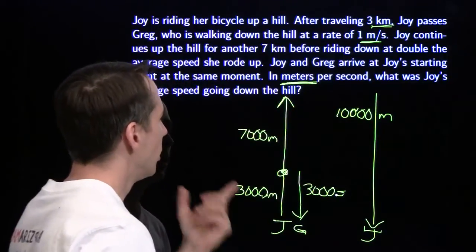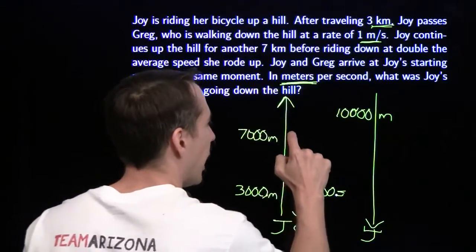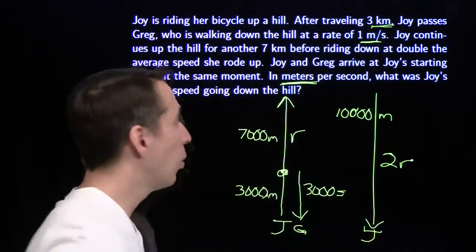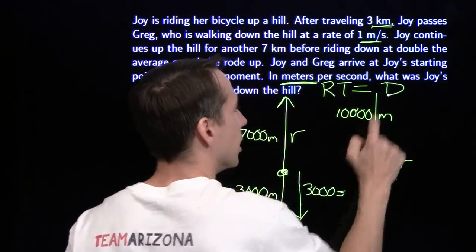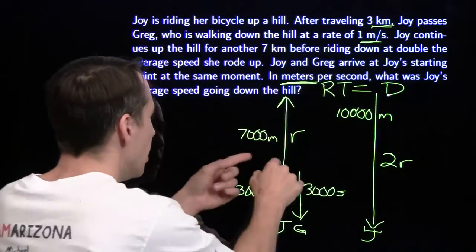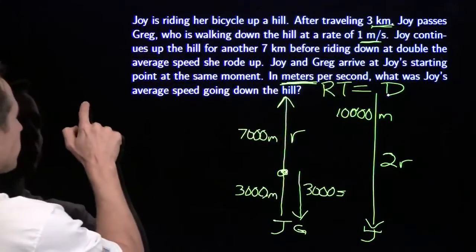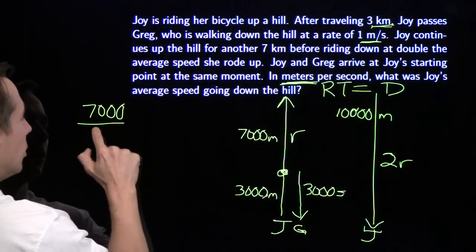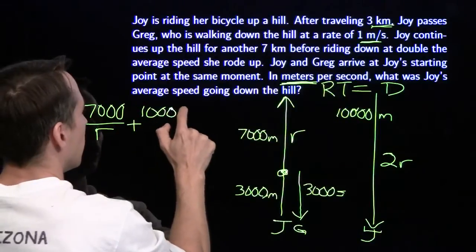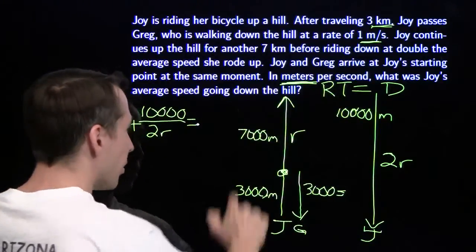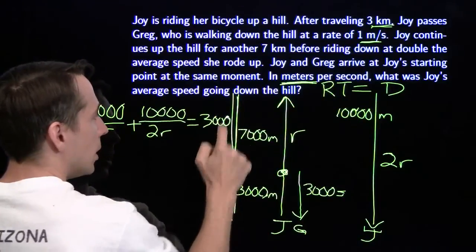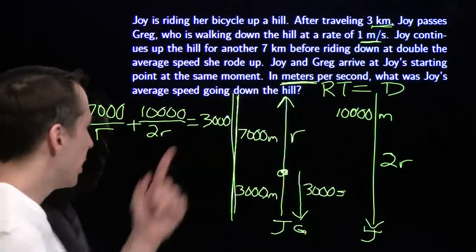We can use that to make an equation. We need Joy's rate, so we'll assign a variable — her rate going up we'll call r. We know her rate coming down is double that, 2r. We'll break out the rate times time equals distance formula and write expressions for her time going up and her time coming back down, and add those together — we need to get 3,000 seconds. Going up, her time is distance divided by rate: 7,000 divided by r. Coming down, the distance is 10,000 meters at rate 2r, so that's 10,000 divided by 2r. Add these together to get 3,000 seconds, because her whole trip takes the same time as Greg's walk.